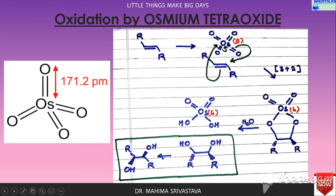Oxidation by osmium tetraoxide is known as osmylation. Osmium tetraoxide is an oxide of osmium. There are many uses despite the fact that the abundance of osmium in Earth's crust is very very less — about 1.5 parts per billion.